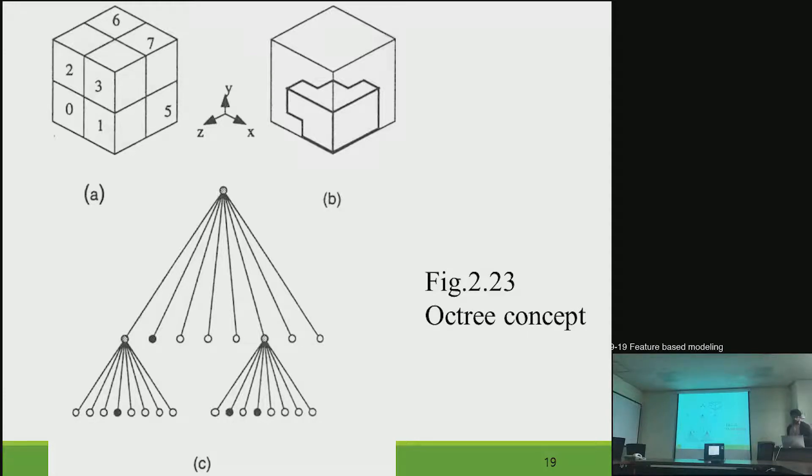And the next is the space subdivision. That represents solid as recursive subdivision. And in that case, we have, we call it as octree. Because from every gray point, there are eight max points.